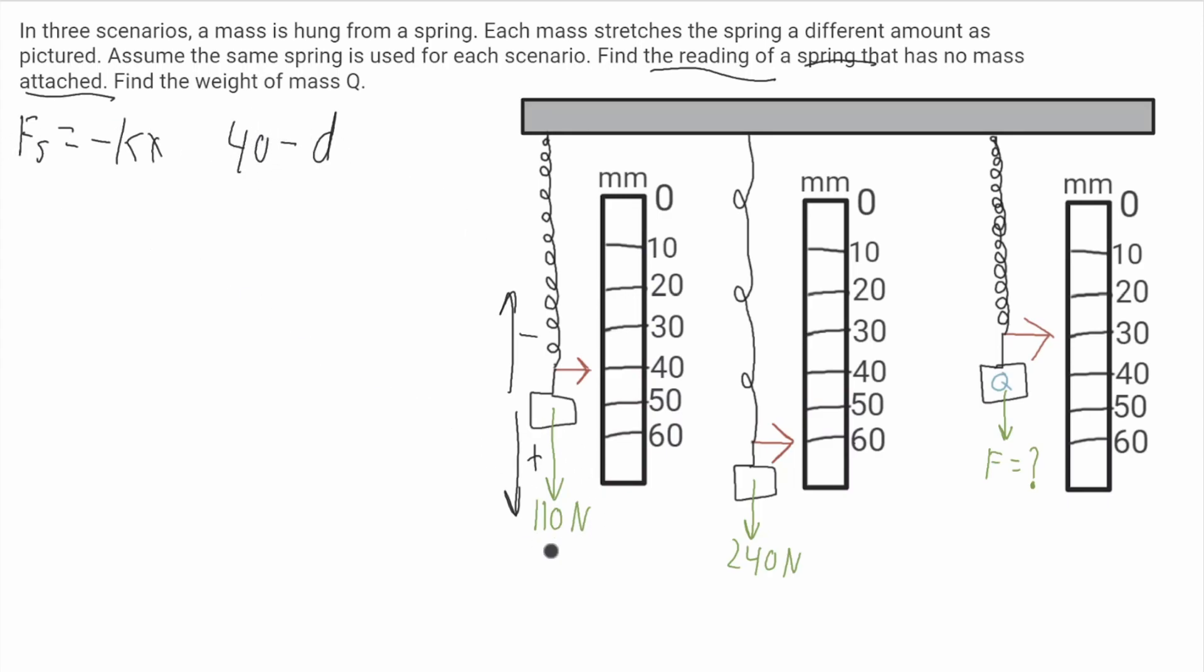Now the force of this mass is 110 newtons. So I'll just call this F which will be 110 newtons. We're assuming that this spring is going to be at equilibrium so the acceleration is going to be zero. We'll get 110 minus k times 40 minus d will be equal to zero. So k times 40 minus d will be equal to 110.